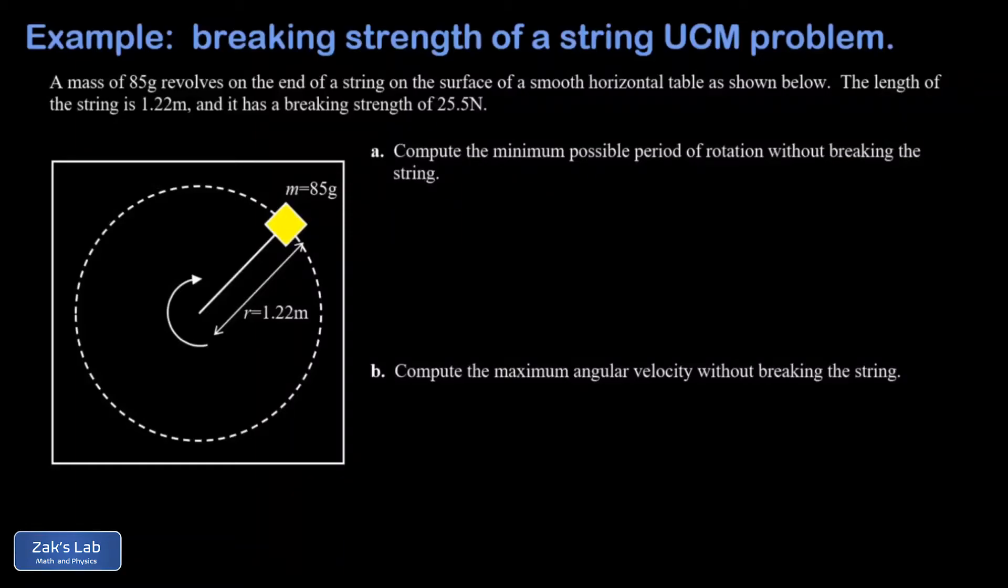In this video we're looking at a mass revolving on a smooth horizontal tabletop. It's attached to a string and we're given the length of that. This time we're told the breaking strength of this string, so that's the maximum tension you can put on it before it breaks. In part a we're looking for the minimum possible period of rotation.